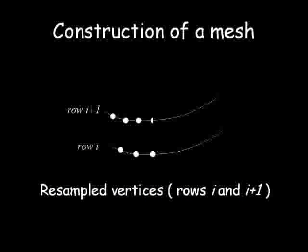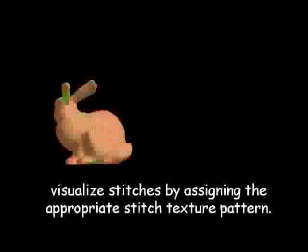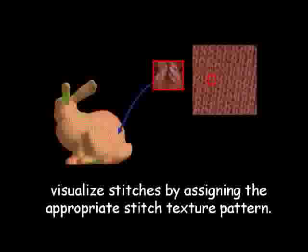The system first places sampling points along each ice contour at constant intervals. We establish point-to-point correspondence previous to next, next to previous, and take union of them. The system visualizes these stitches by assigning the appropriate stitch texture pattern to each cell.